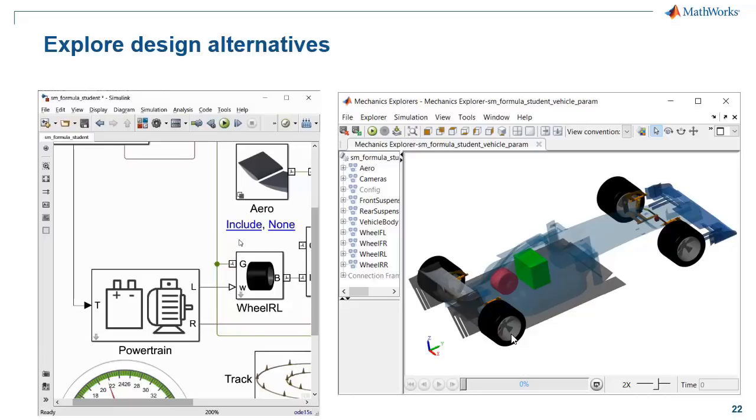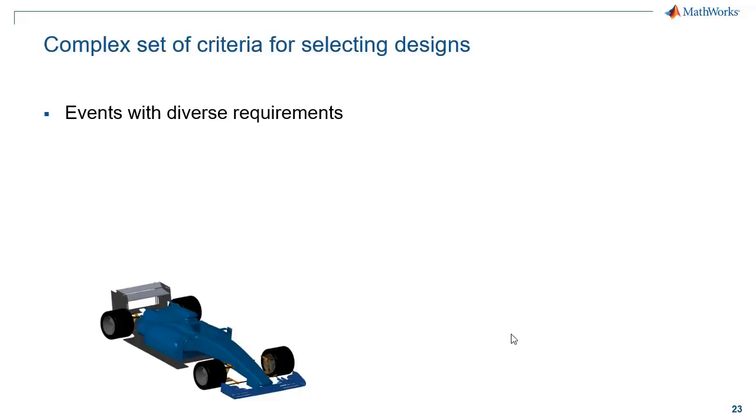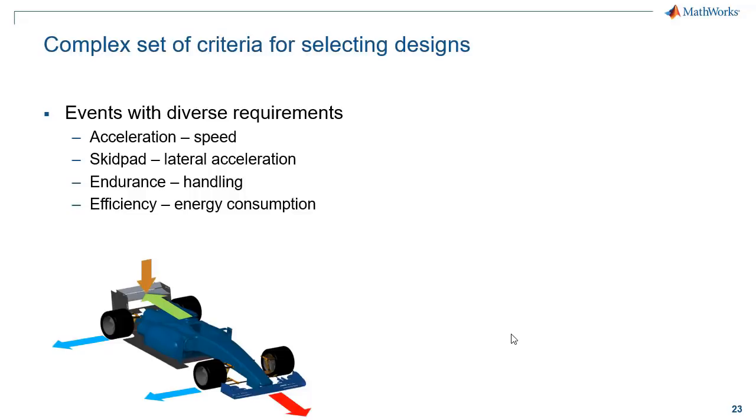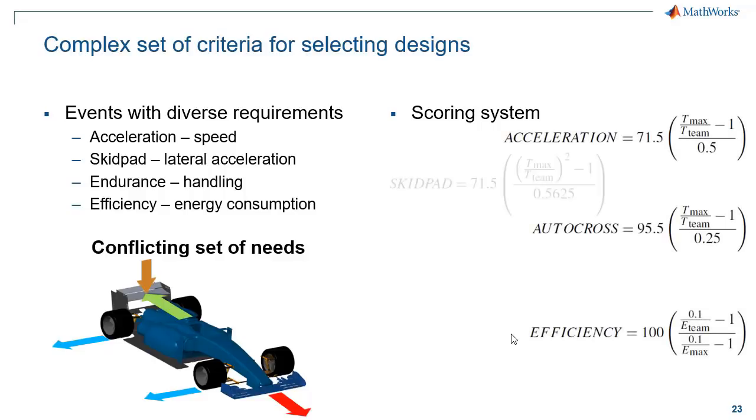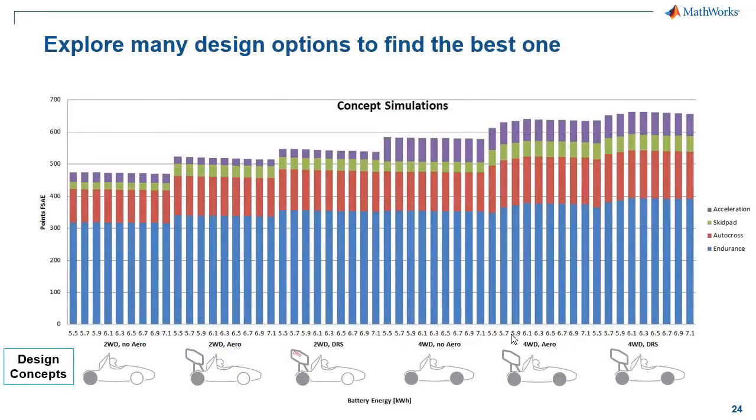So we can quickly tweak our design. And coming back to the original question about how do you know which design is best, in this case it actually turns out to be pretty complex. So there's a diverse set of requirements that these vehicles are going to be judged on related to acceleration and handling and energy consumption. And what makes it even more challenging is that these requirements often conflict with one another. So if you improve in one, it often takes away from the other. There's also an associated scoring system that's somewhat complex and has many competing priorities. So it's pretty complex to actually figure out which design is going to suit your needs the best. And we ultimately deal with this by running lots and lots of simulations. So in this case, for literally hundreds of design alternatives.